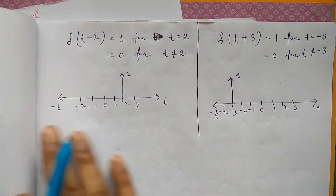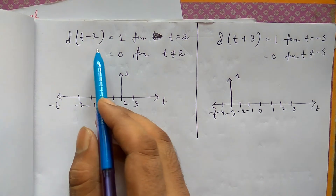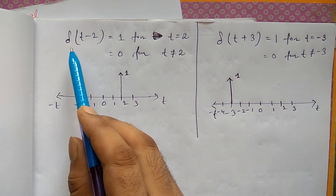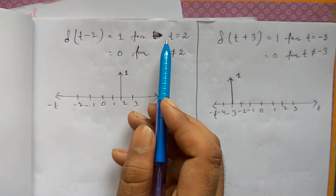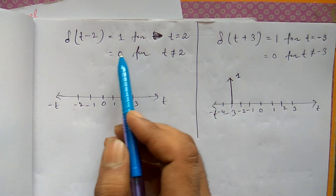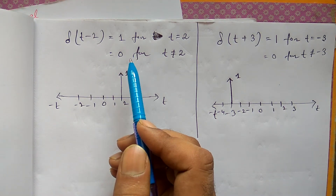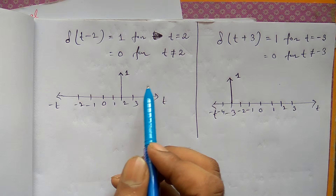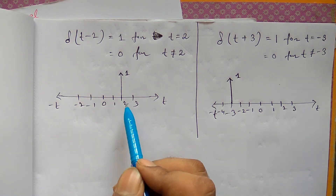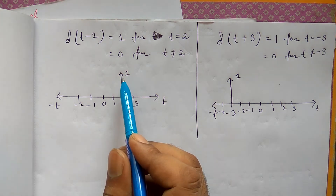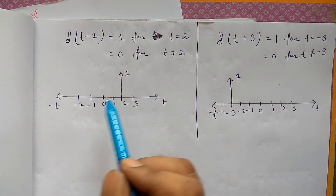Here are some shifted versions of the unit impulse function. Shifted by two steps, it is expressed as δ(t-2), which will be 1 for only t equal to 2, and for other values of t except t equal to 2 that will be 0. Graphically, at t equal to 2 the value is 1, and for other values of t it is 0.